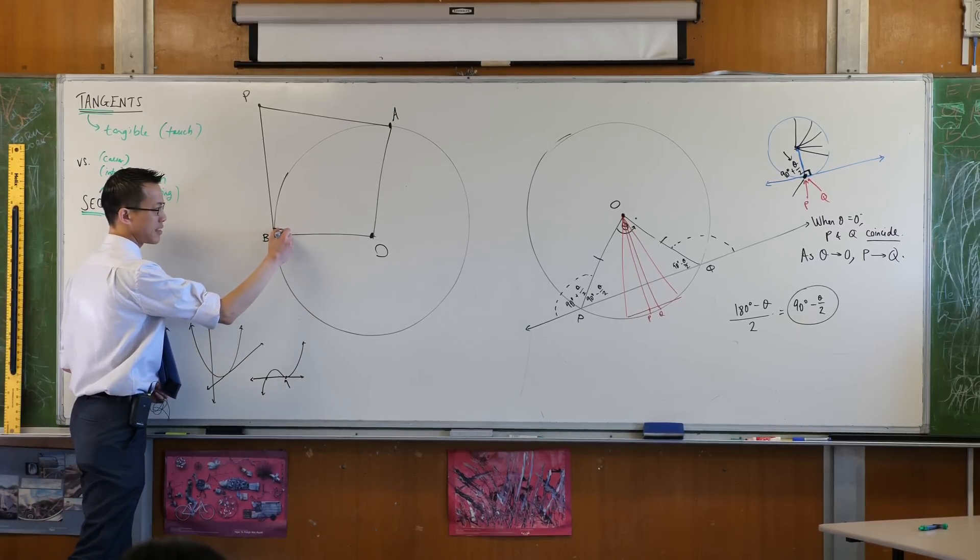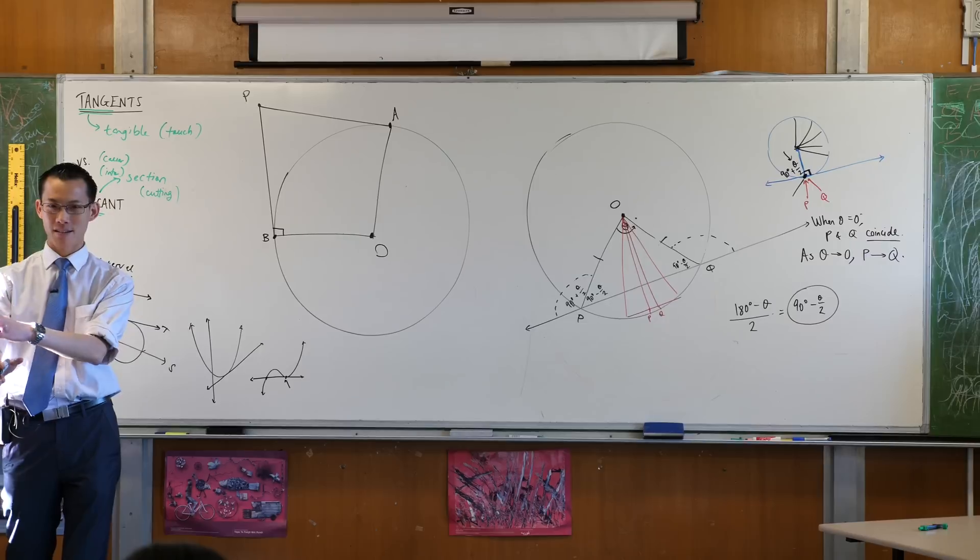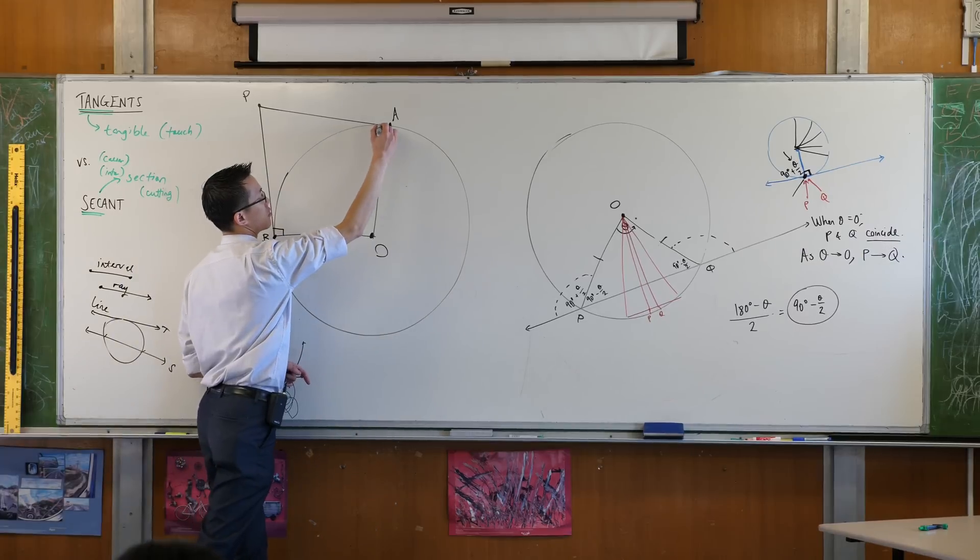Because PB is a tangent and OB is the radius at the point of contact. Do you agree? So they're perpendicular. Where's the other one? PAO.